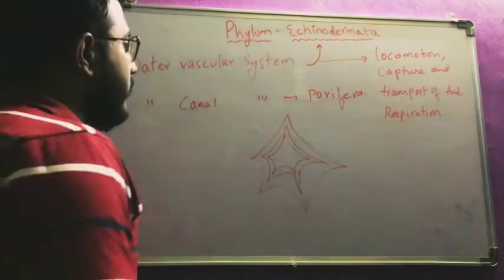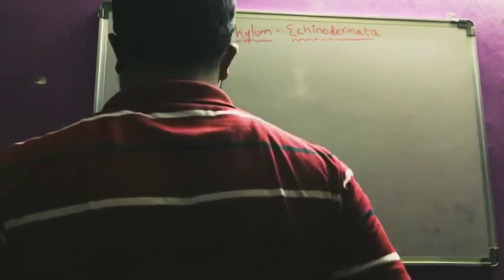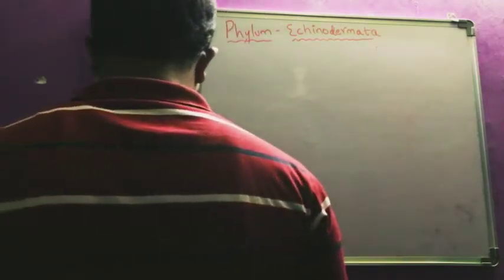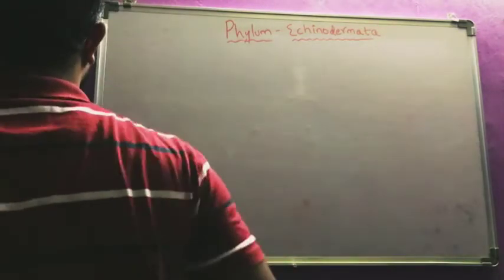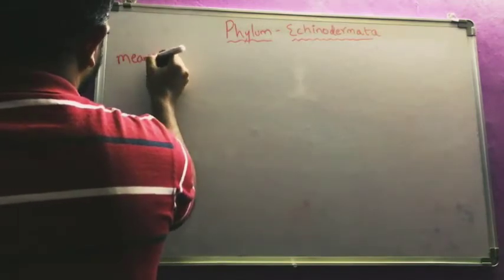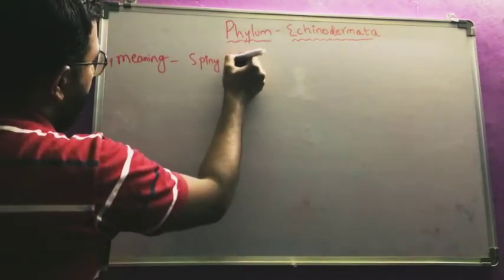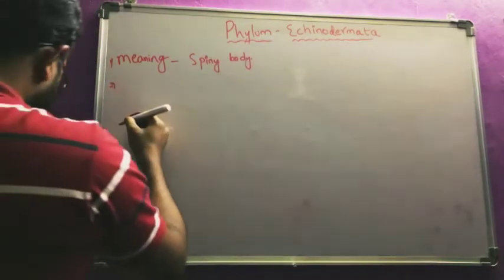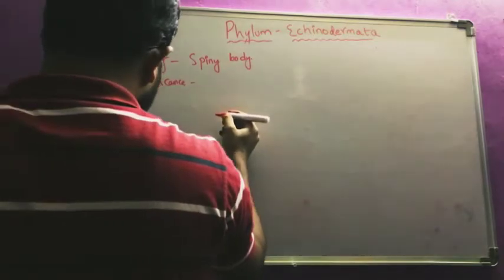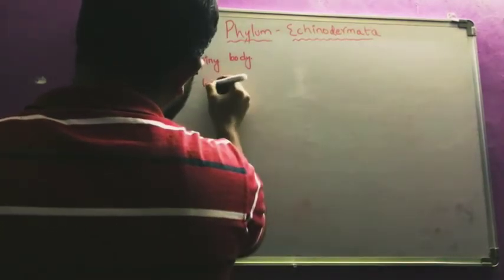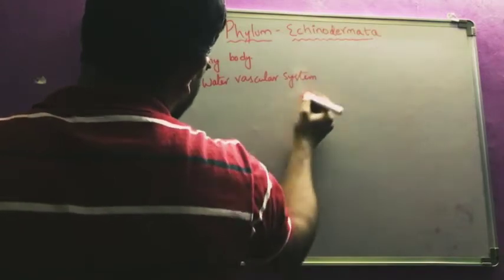Now we will see the general characters of this phylum. First, the meaning of the name Echinodermata is 'spiny body.' The significance of this phylum is that it has a water vascular system — no other phylum has this. Don't confuse water canal system with water vascular system.